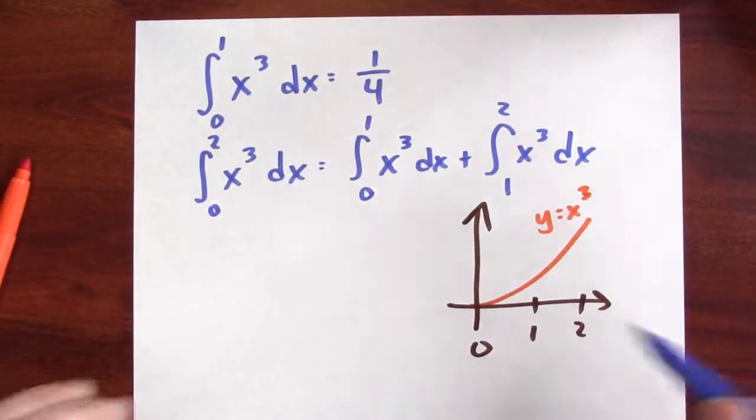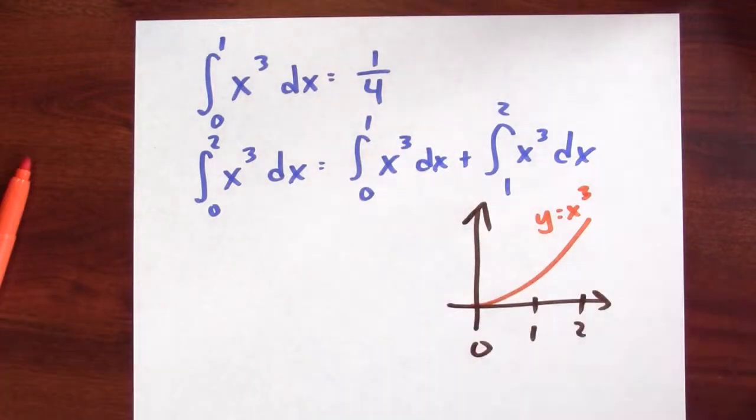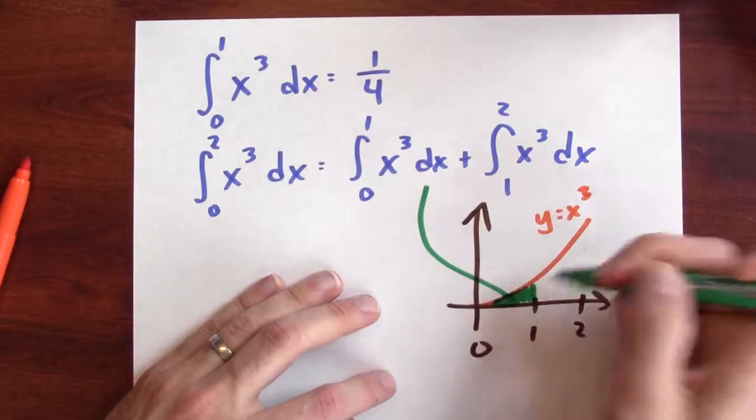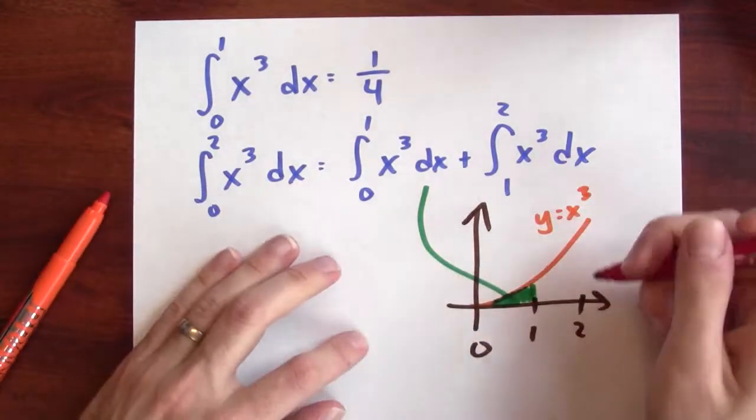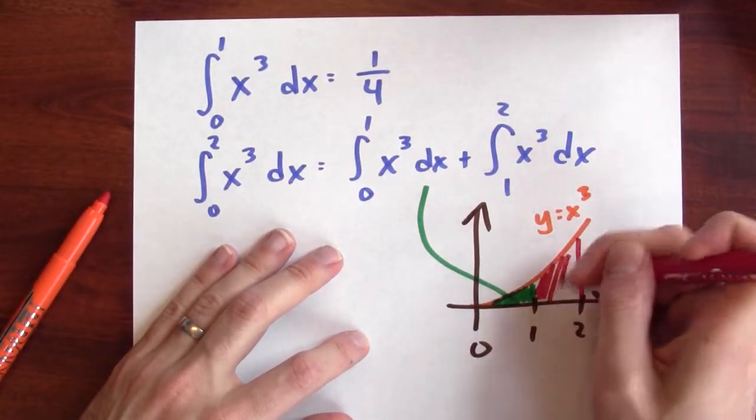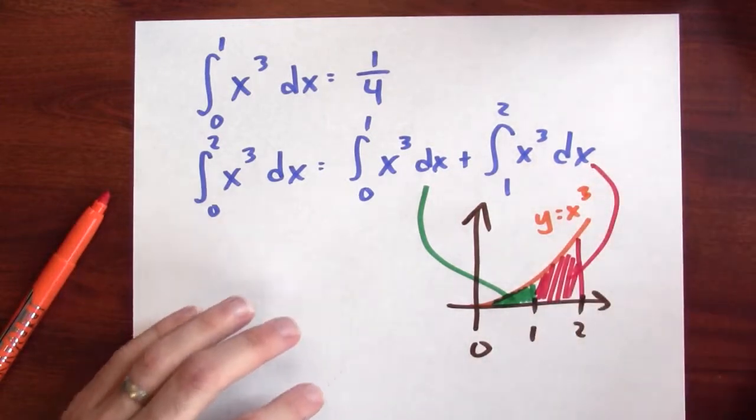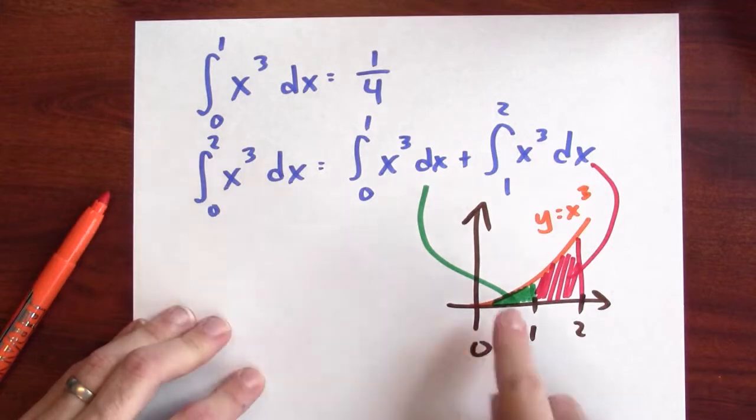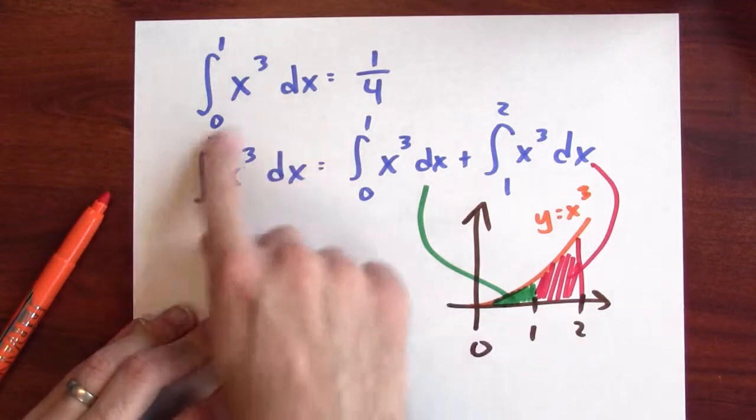Here's the function y equals x cubed, say. This first integral from 0 to 1 is calculating the area here. That's what this integral is calculating. The second integral from 1 to 2 is calculating this area here. And if I add together these two areas, I end up getting the area from 0 to 2, which is what this integral is calculating.